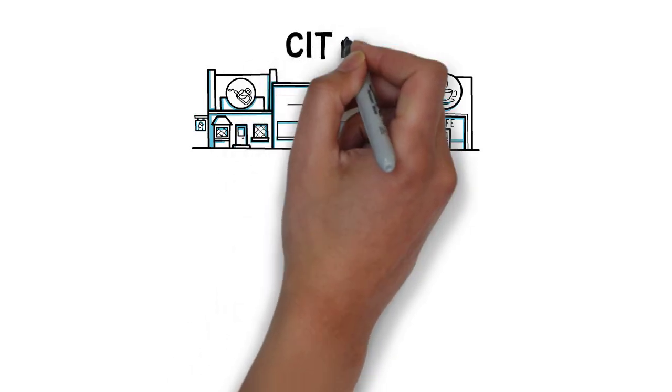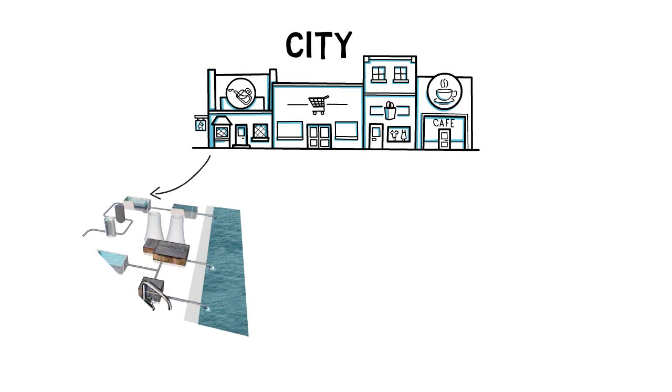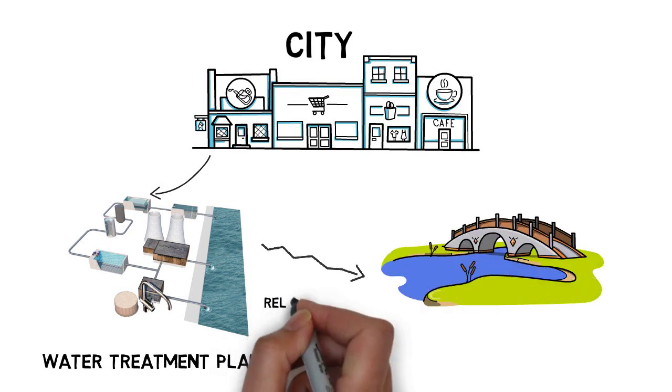After the tap water is consumed from private households or industries it drains into a main wastewater pipeline. The pipeline leads to the area's wastewater treatment plant where water is either purified for direct use or for release into the environment, for example lakes and rivers.